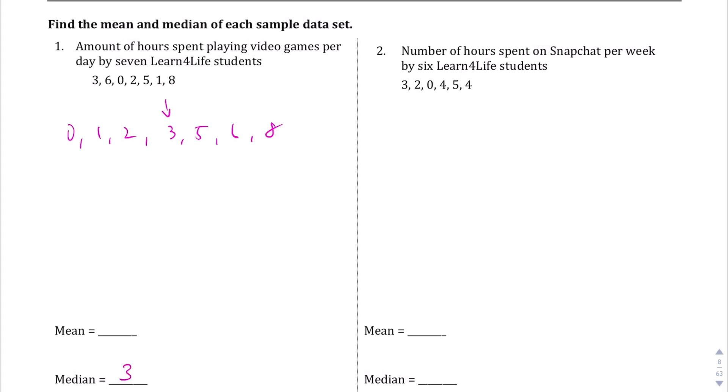And our mean, or arithmetic average, is going to be 0 plus 1 plus 2 plus 3 plus 5 plus 6 plus 8. And when you go ahead and do that, we're going to divide that by 7, because that's the number of items. We see 0 plus 1, and then you're going to get 25 over 7.